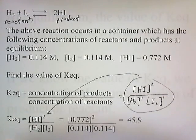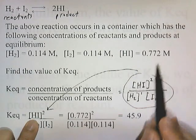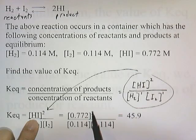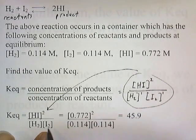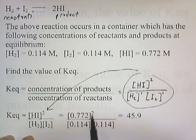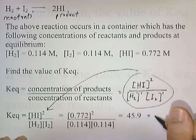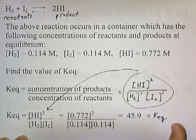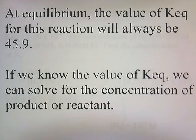Filling in the numbers: concentration of HI is 0.772 squared, divided by concentration of H2, 0.114, times concentration of I2, 0.114. This number squared divided by the product of those numbers equals 45.9. So that's the value of the equilibrium constant. At equilibrium, the value of Keq for this reaction will always be 45.9.